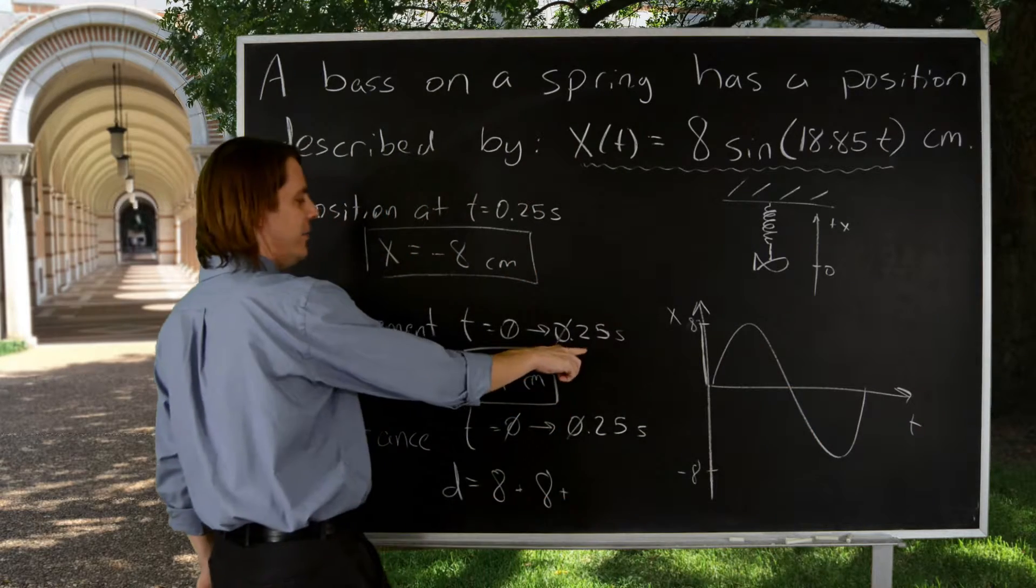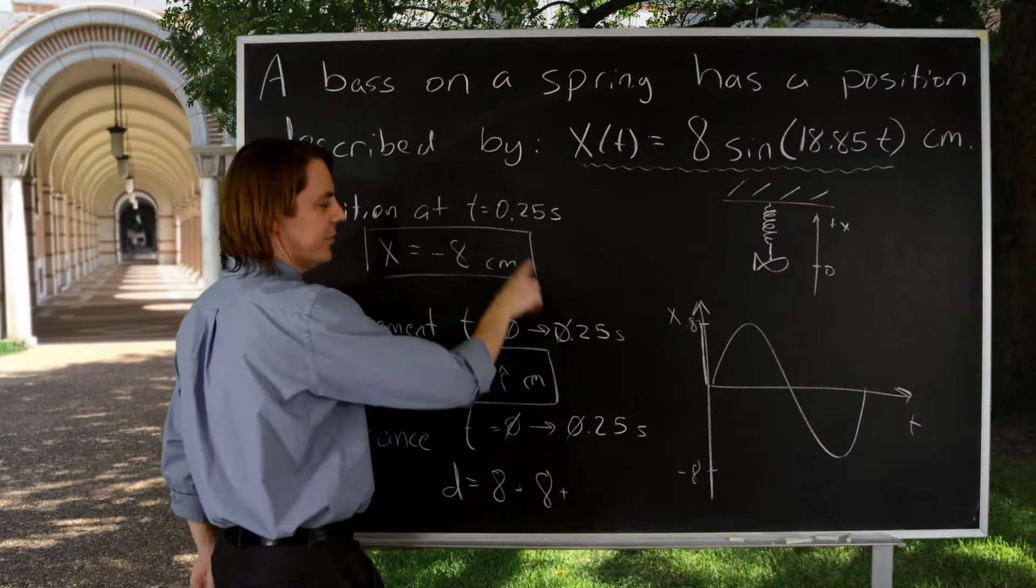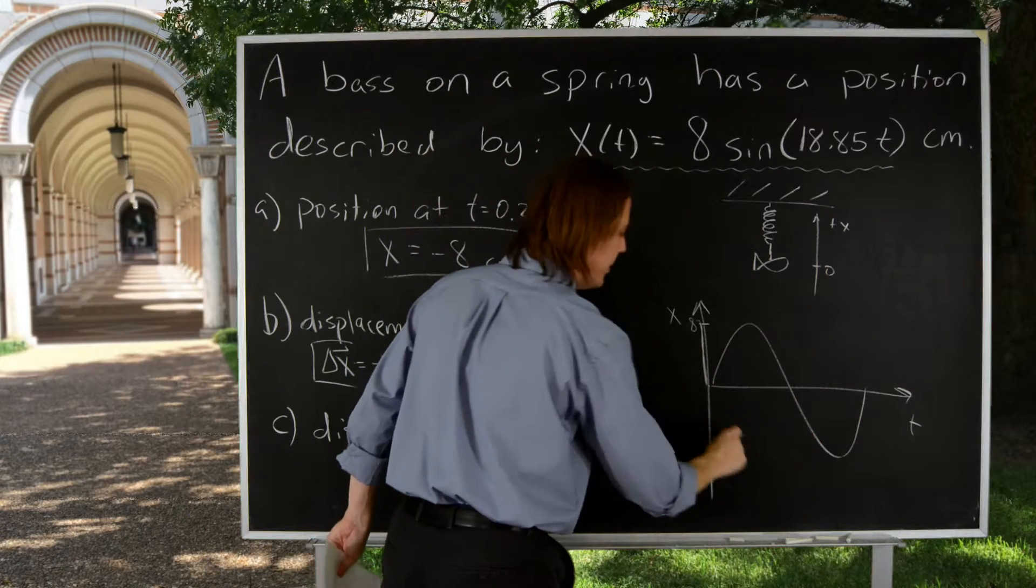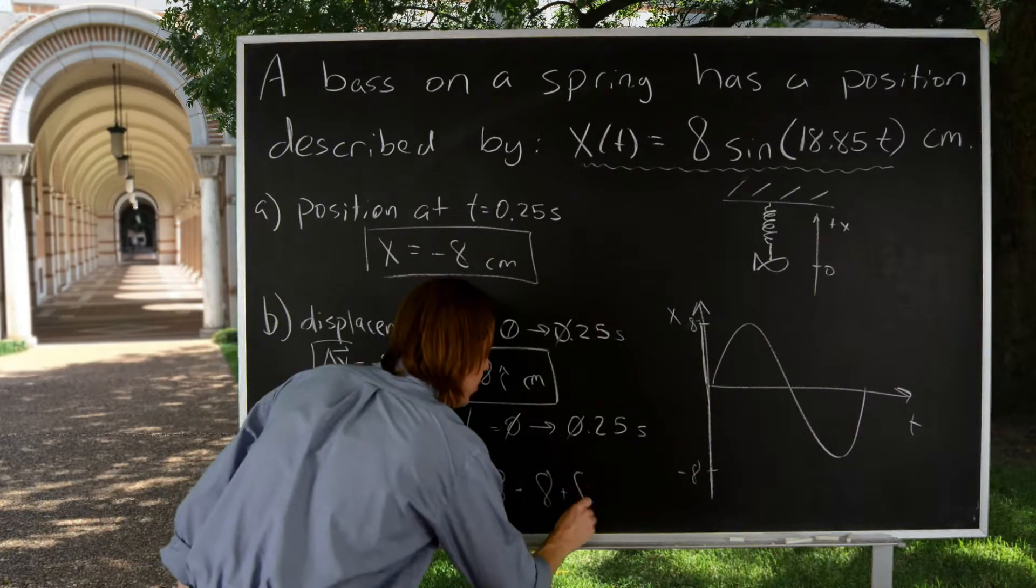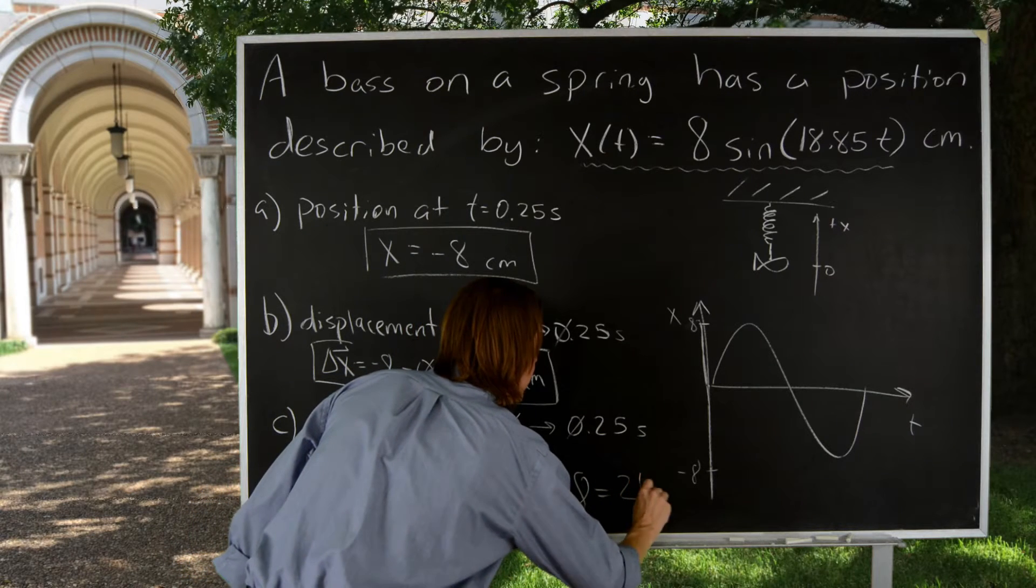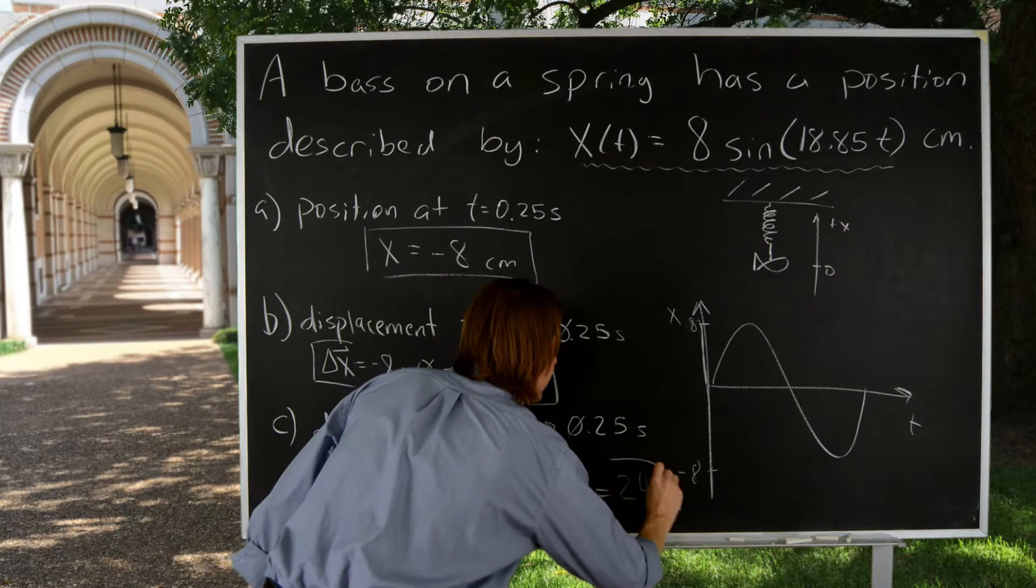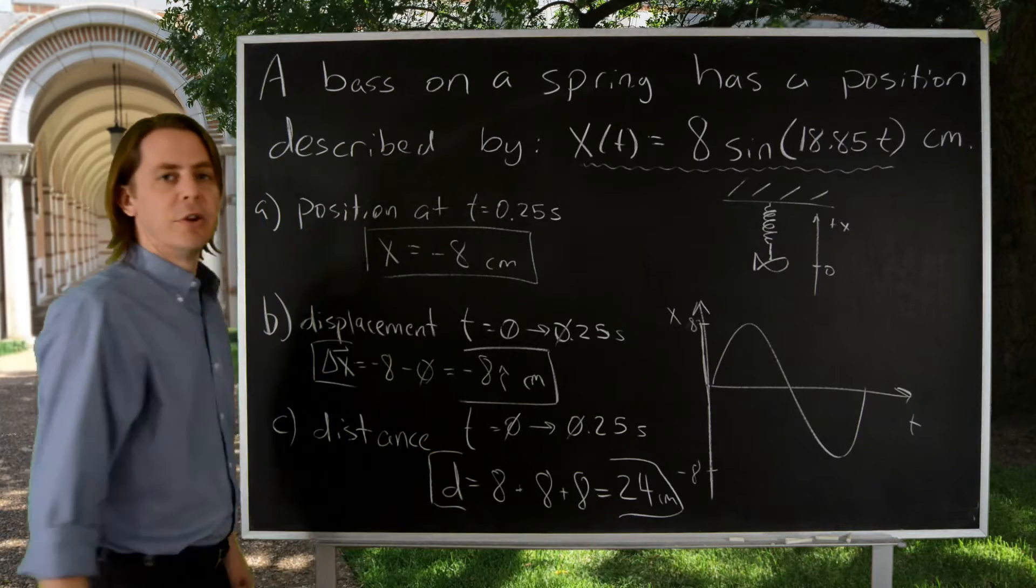And then 0.25 is the same position we keep talking about, or the same time we keep talking about. It went down another eight, down to there. So plus eight more. 24 centimeters is your distance.